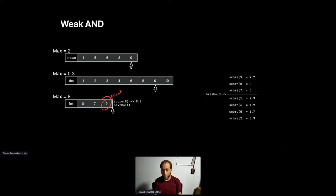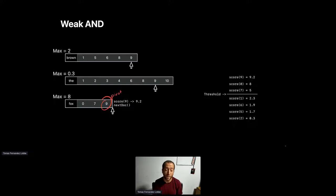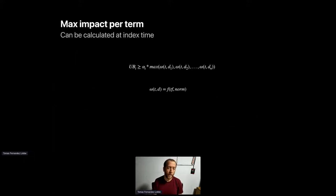As you can see, I was able to skip over a lot of documents — I didn't have to score them all, yet the top three are guaranteed to be correct. Also, if there were more documents at this point, we wouldn't care about any document that doesn't match 'fox', because the threshold would be 5, which would keep the iteration going very fast.